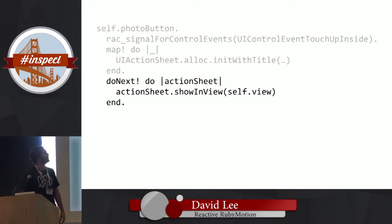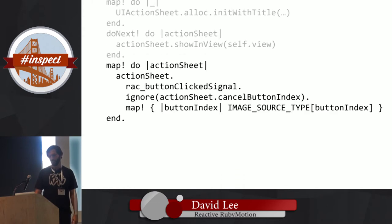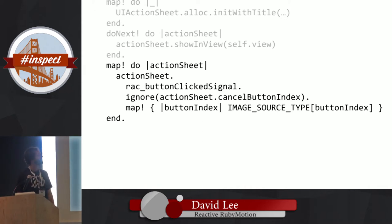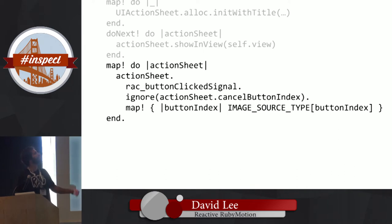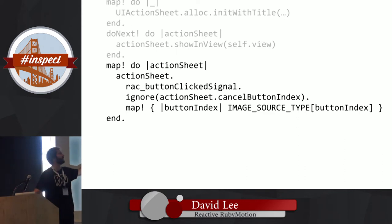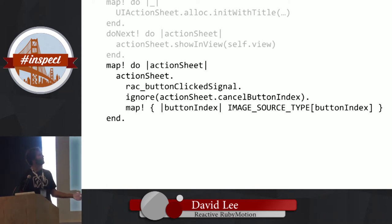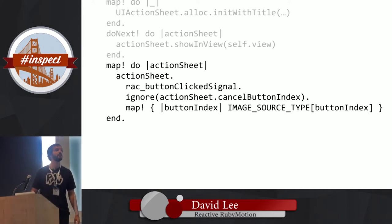Next is 'do' — basically like 'each' — and you could do an alias if you want. We map it, and for each one we're going to show it. Here's where we get into slightly more complicated reactive code. We have an action sheet that would normally use a delegate. Instead, we have a signal that sends values just like the button tap above — whenever you select one of the items it sends the index of what you clicked. The next line uses 'ignore' to ignore the cancel button. Finally, we map from the button index to a source type, because we're going to use an image picker controller which has a source type.